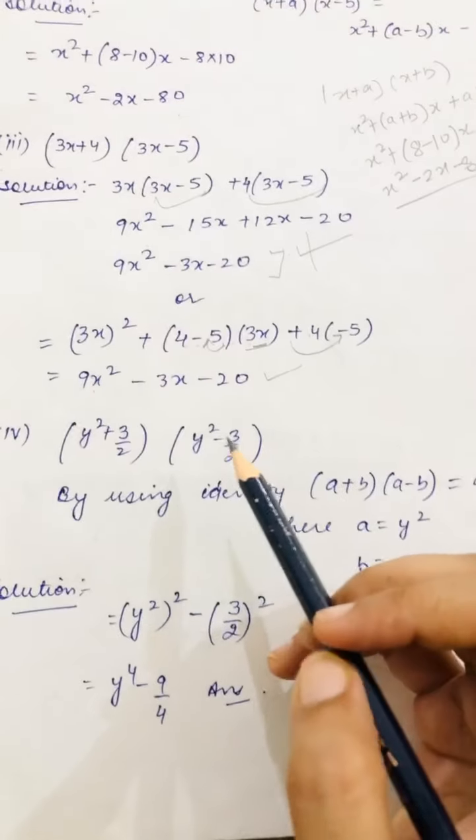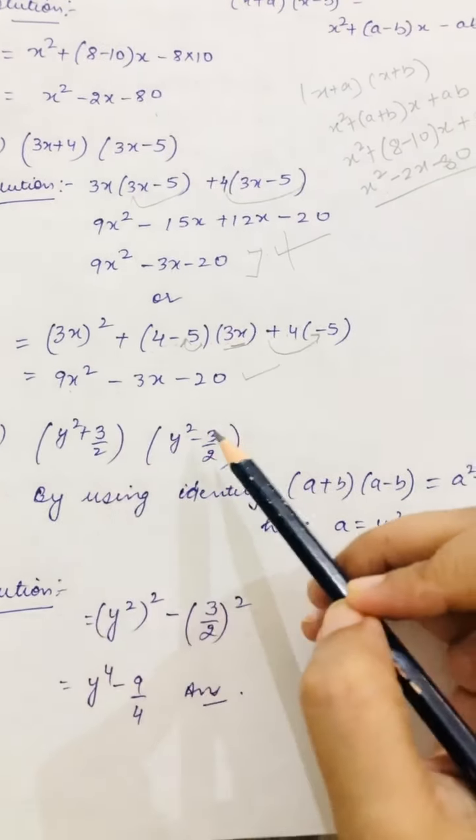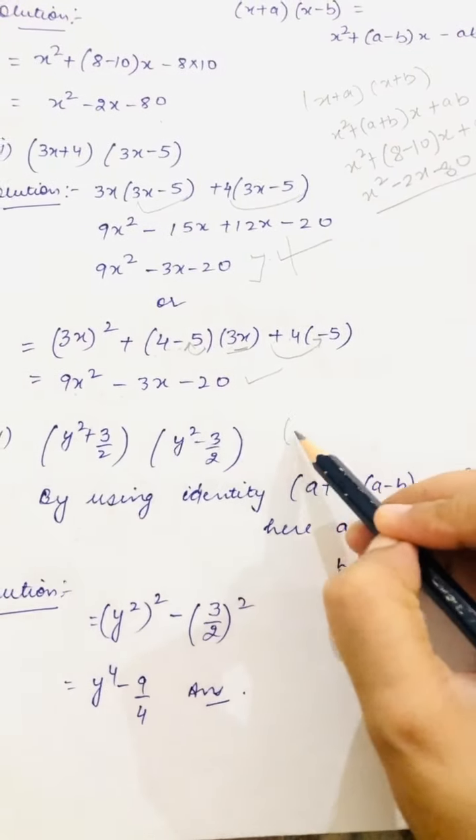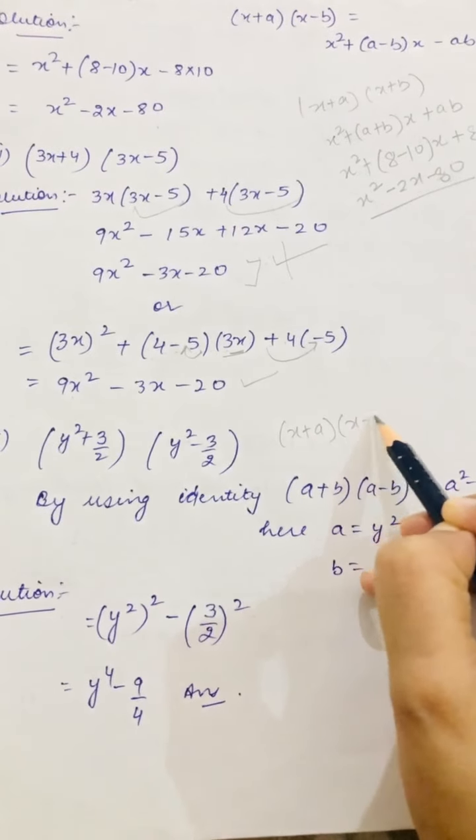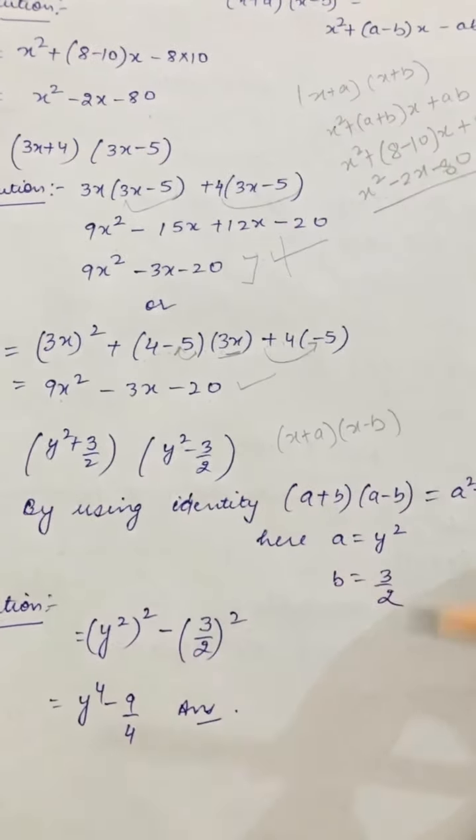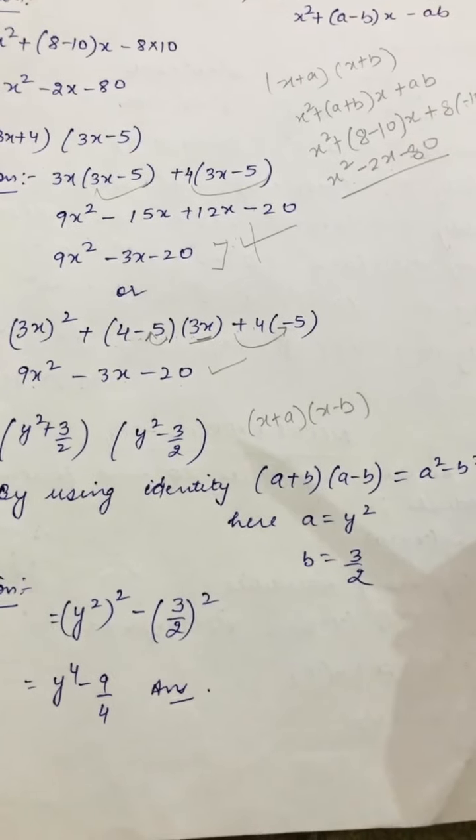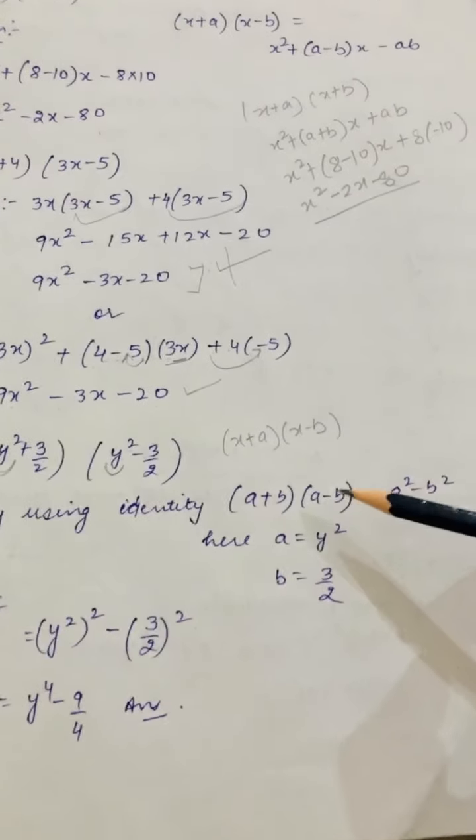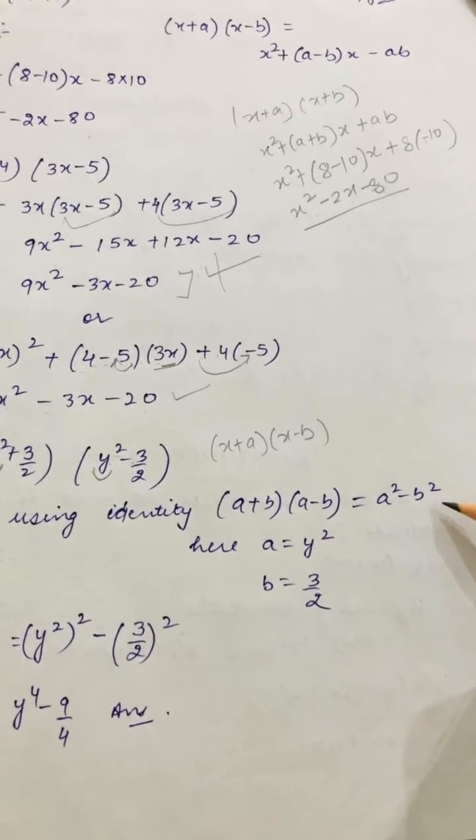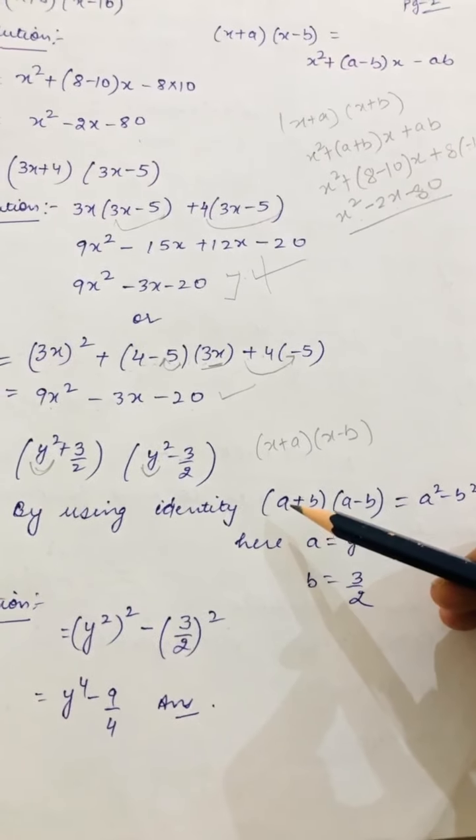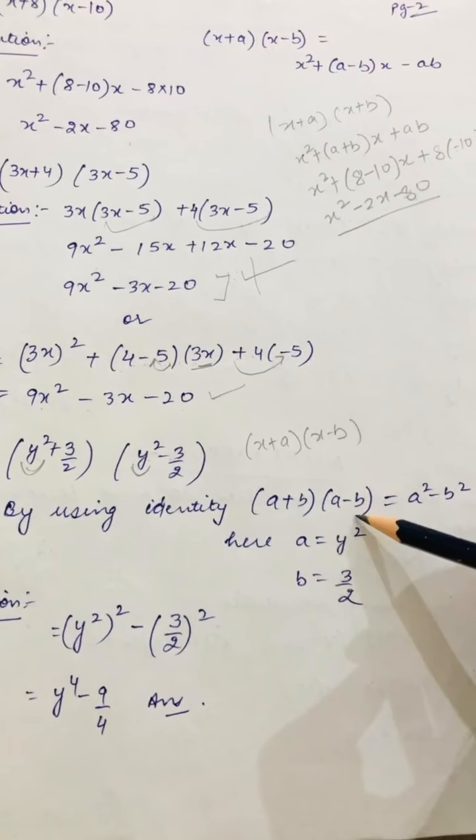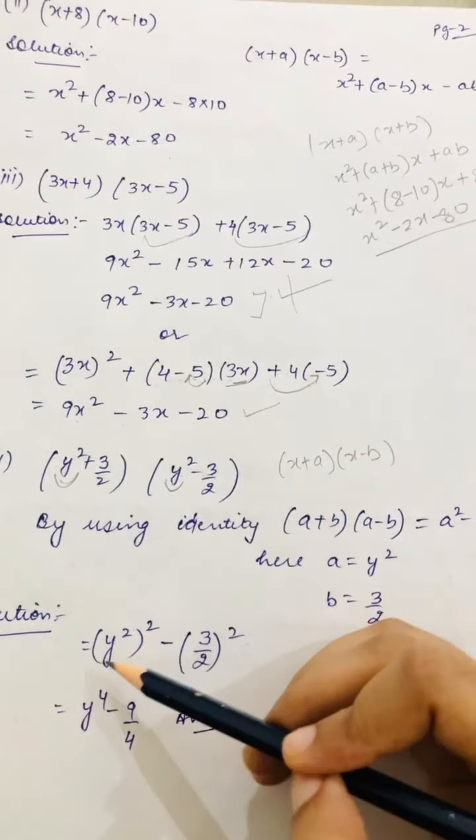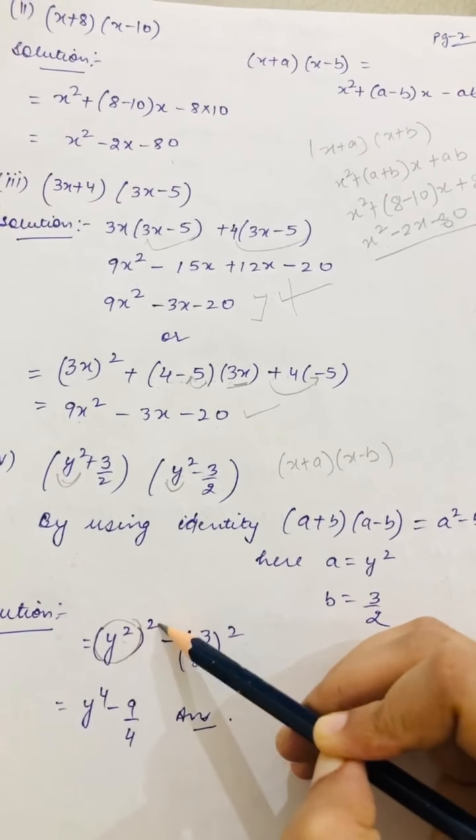Question number 4 that you have: (y²+3/2)(y²-3/2). Now what is its identity? This can also be applied, the (x+a)(x-b) one, because x is the same, y². If you don't want to apply this, then there's another identity we have. Consider this as a, a+b. Consider this as b, a-b. So which identity is this? a² - b² one. What is a in this? y² is there. What is b? 3/2 is there.